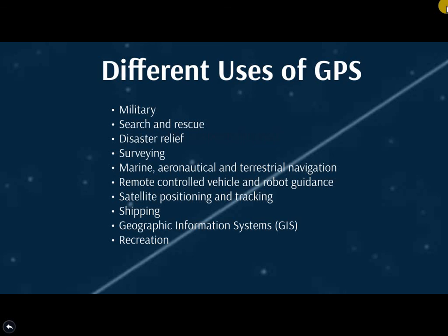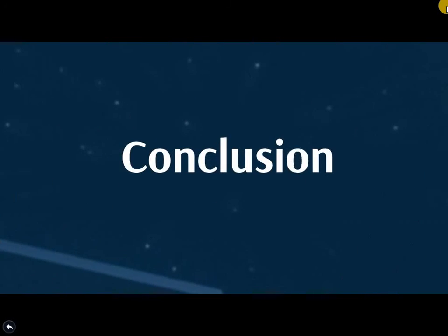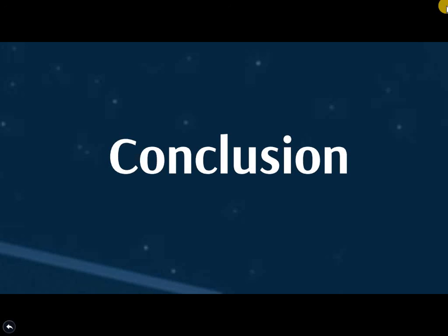So we have discussed all the uses, and now we will summarize all the aspects covered in this lesson. First, we defined GPS — its purpose and basic principle. It has different segments: the user segment, space segment, and control segment. After that, we studied the uses and functions of the GPS. Thank you very much.